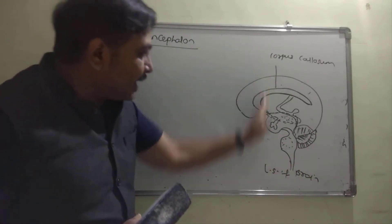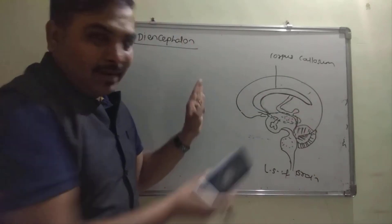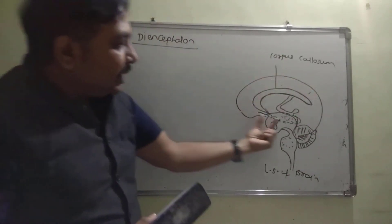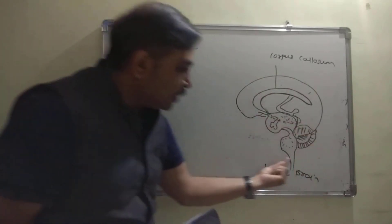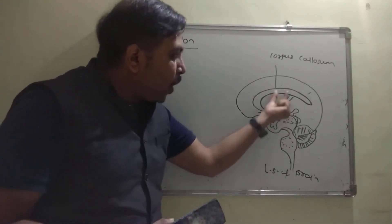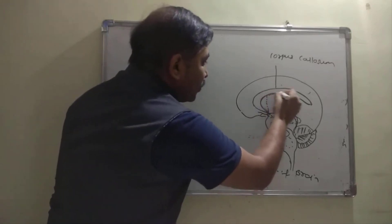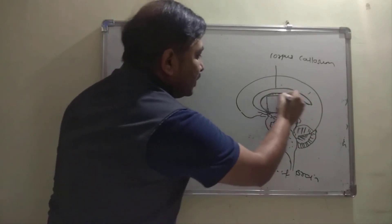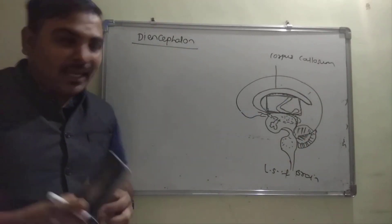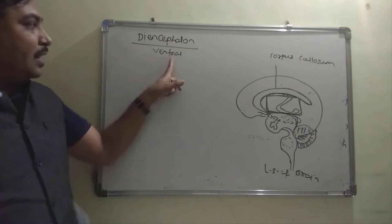The diencephalon is present ventral to the corpus callosum and dorsal to the midbrain — meaning above the midbrain and below the corpus callosum. To study the diencephalon, think of it as a box divided into three parts: the roof, the side walls, and the floor.